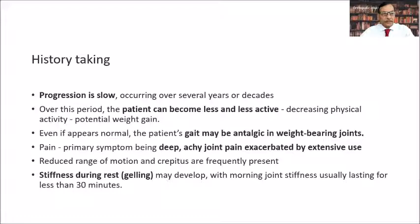Let us start with history taking, which is very important. In history taking for osteoarthritis to be diagnosed, we have to prove that the progression is slow — it takes several years or maybe decades to have a full-fledged osteoarthritis in the patient. And in that course of the period, the patient can become slowly less and less active.